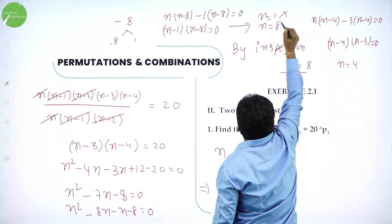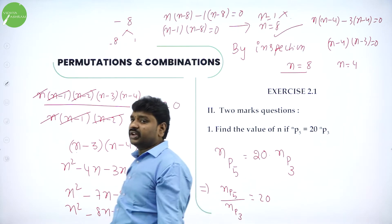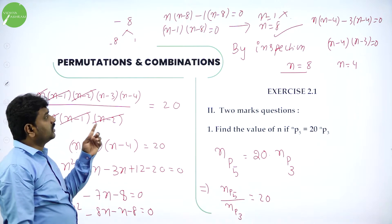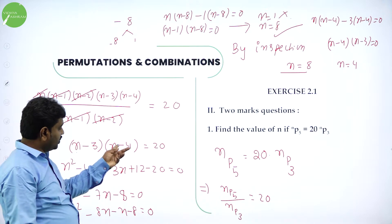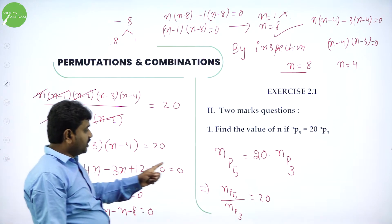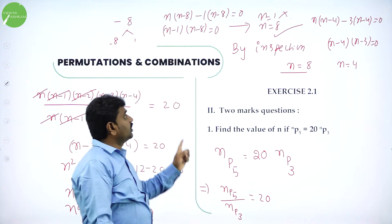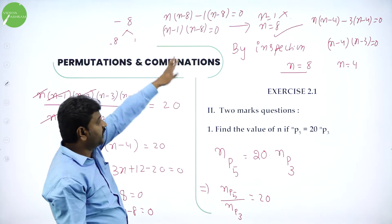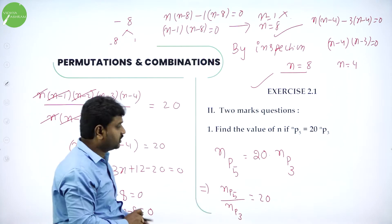N equals 1 is not possible; N equals 8 is possible. If you take N equals 1, it will become a negative value — 1P5 is not possible. Always N should be greater than R, so therefore I take N equals 8. Both methods give N equals 8.